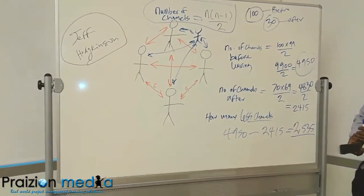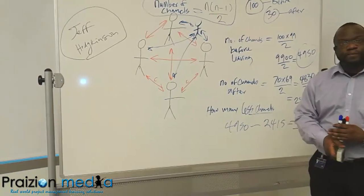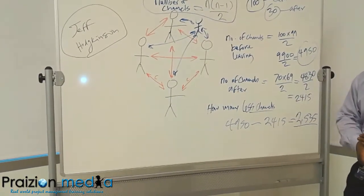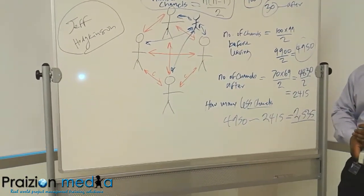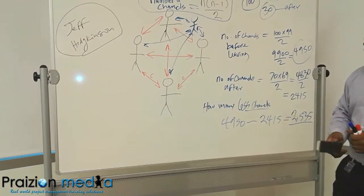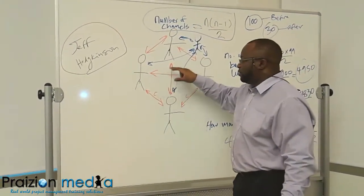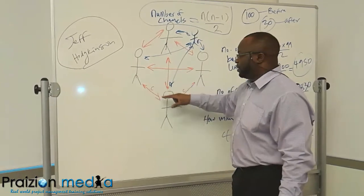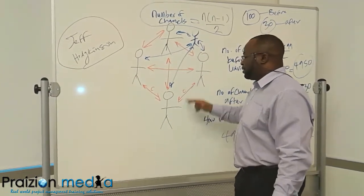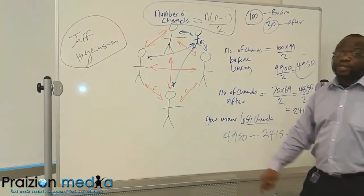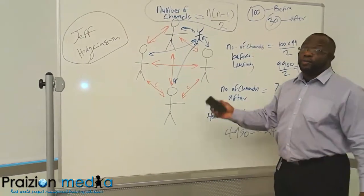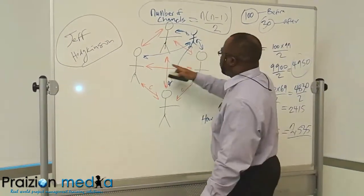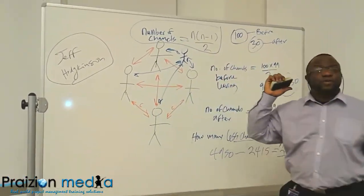So would it be safe to say the total amount of channels are equal to the amount of arrows going in both directions? Yes, so this is one channel, this is another channel, this is another channel. Just going just one time, not coming back. So let's talk about it like this. It could be one direction. It's like a phone line.